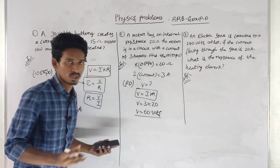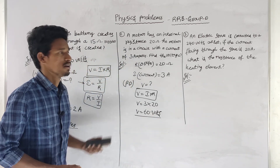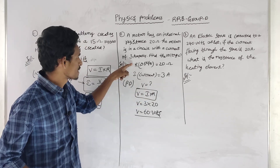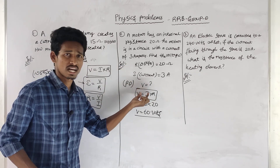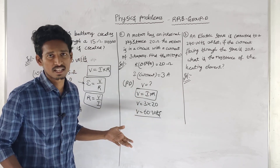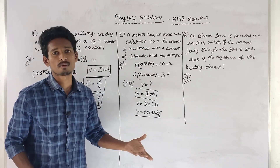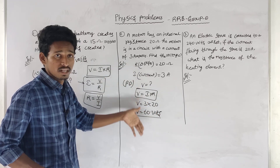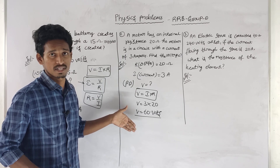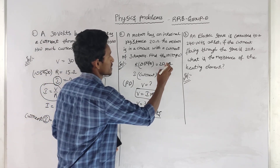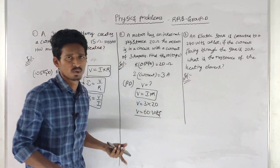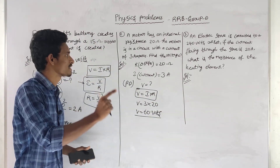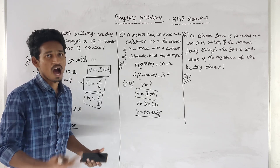V is equal to 3 times 20, which is 60. So 60 volts. We use the formula I into R and find the result. 3 times 20 is 60 volts.